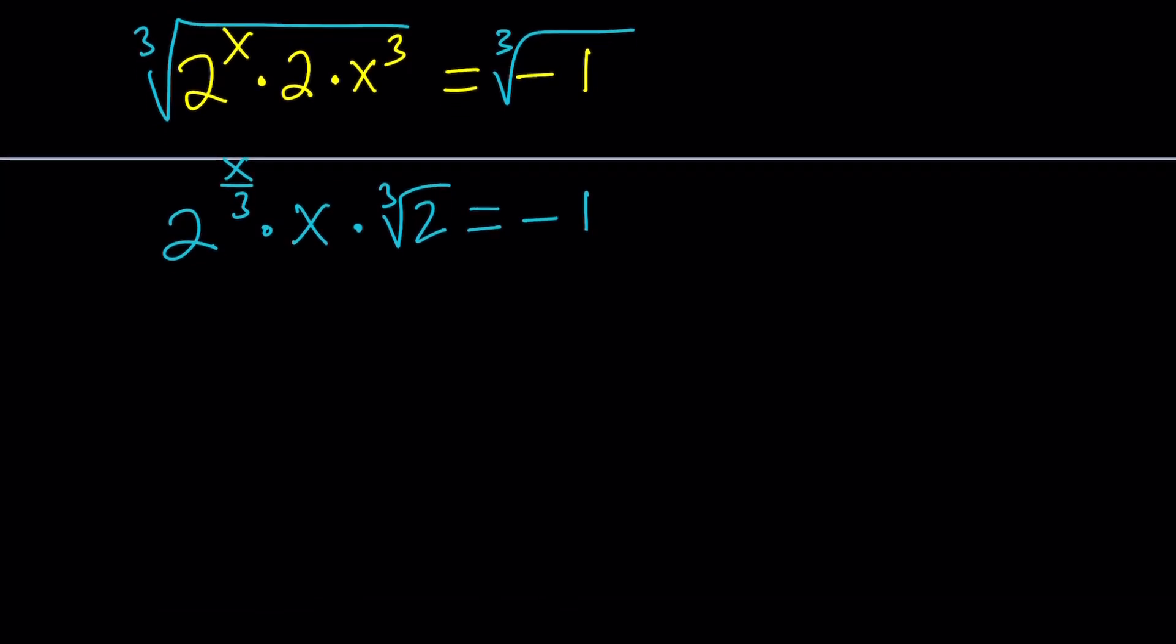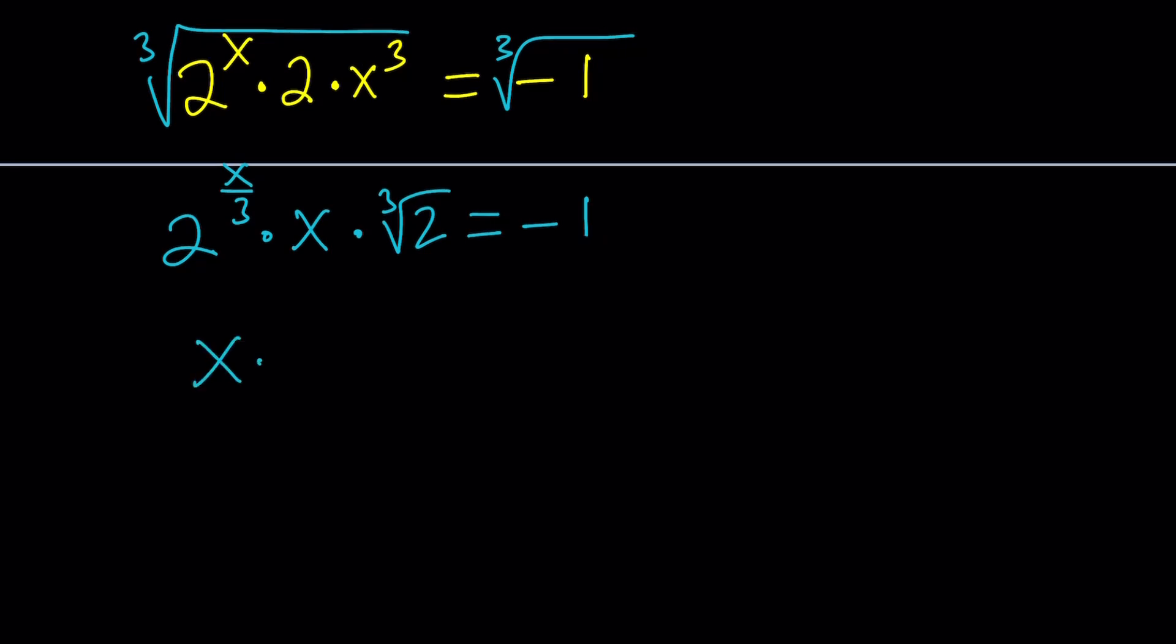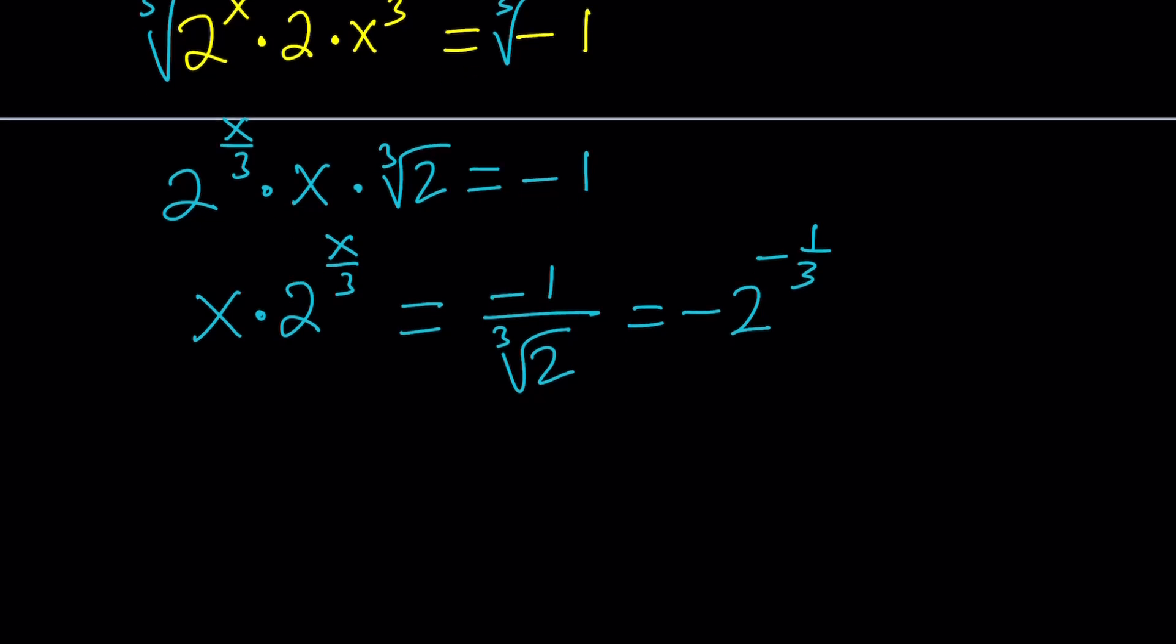Now we can leave the x and 2 to the x over 3 together. Write this as x times 2 to the power x over 3 equals negative 1 over cube root of 2. I can write negative 1 over cube root of 2 as negative 2 to the power negative 1 third. That's going to be more helpful for us.